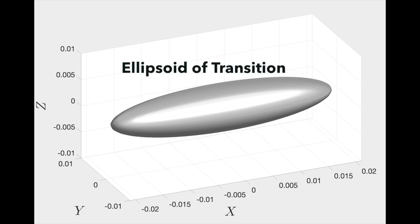Transition events are important in chemical reactions, snap-through buckling, and even orbital mechanics. For a transition to occur, the system state has to be within an ellipsoid of transition.